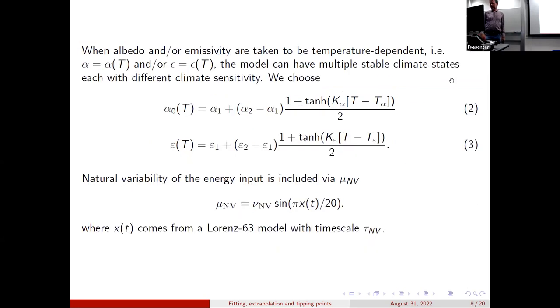Rho is the concentration of atmospheric CO2. So basically this is either going to be rho zero or it's going to be four times rho zero. So you just get a jump in the forcing to a new constant value. If you have temperature dependent albedo and emissivity, then it's well known you can have multiple stable climate states, each with possibly a different climate sensitivity. So we're looking at a fairly general functional form here that will take us from one albedo to another as you pass some critical temperature and one emissivity to another as you pass another critical temperature. And then the natural variability we're adding in some sort of chaotic Lorenz-63 forcing.